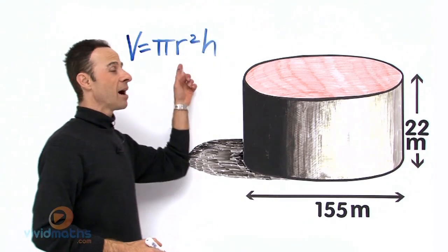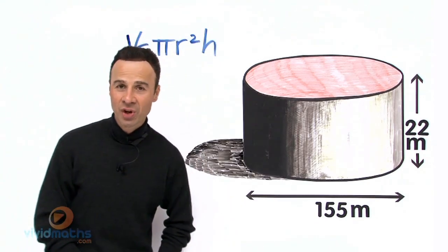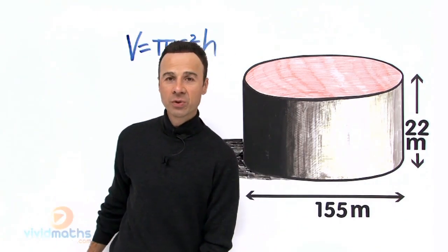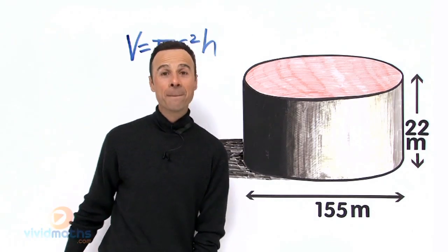Okay, there's our formula. We need r for radius. We're not given r; we're given diameter. The diameter, as I said, is a whopping 155 meters from here to here.